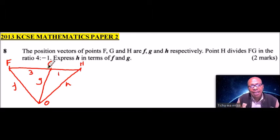G externally in the ratio 4 is to minus 1. So we are taking now, using the ratio theorem, we take the ratio of F to H and we put the position vector G and G to H and we take the position vector F. So that is how you apply the ratio theorem.